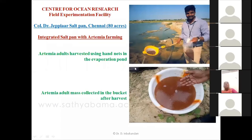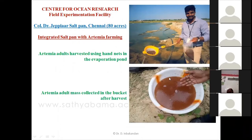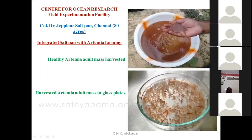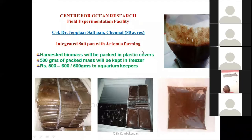Once the artemia grow into adults, they are easily harvested using hand nets. Our scientists are collecting them in polythene bags — you can see a bucket full of adult artemia. In petri dishes you can see the reddish color artemia that have grown up very well. The artemia biomass is packed in plastic covers of 500 gram size and frozen at minus 20 or minus 80 degrees Celsius. This frozen live artemia is in high demand in the aquarium market and can be sold at 500 to 600 rupees.